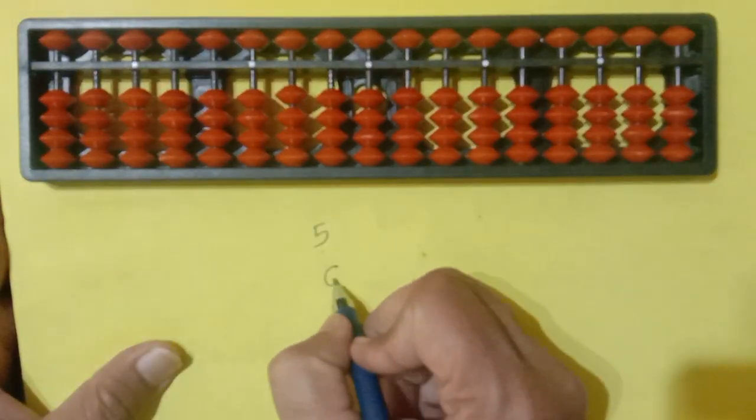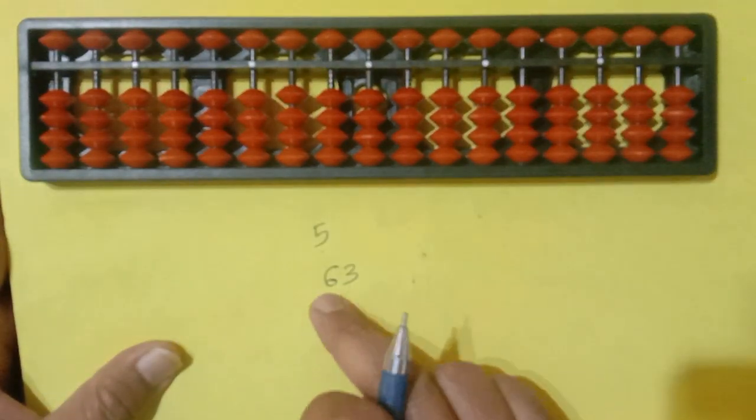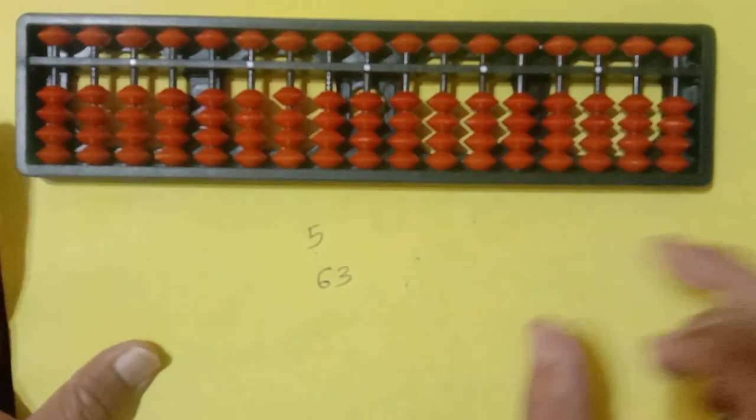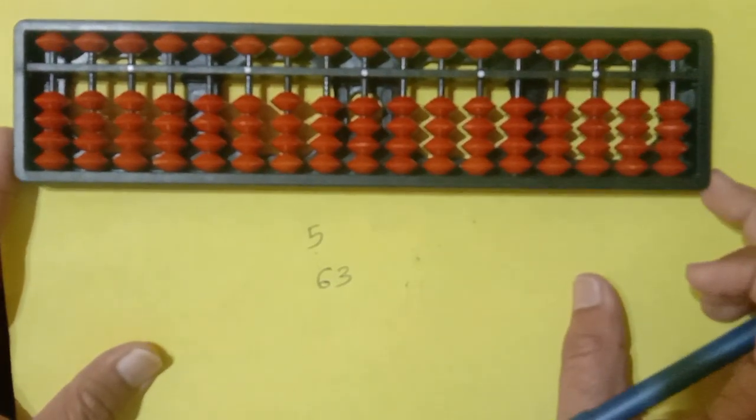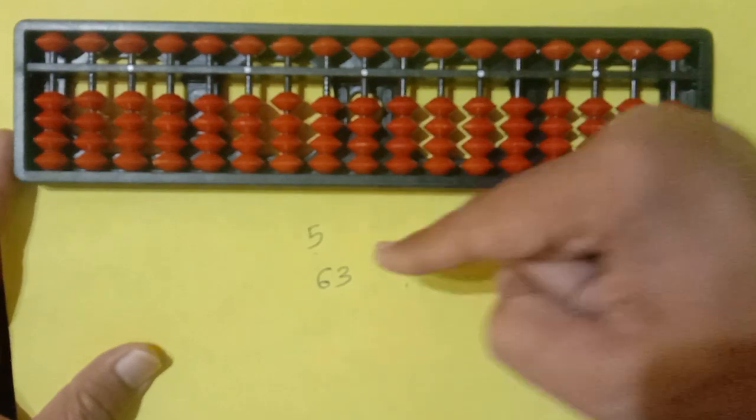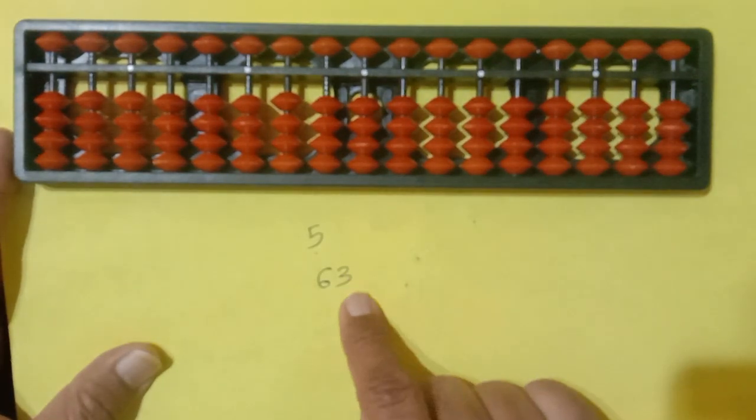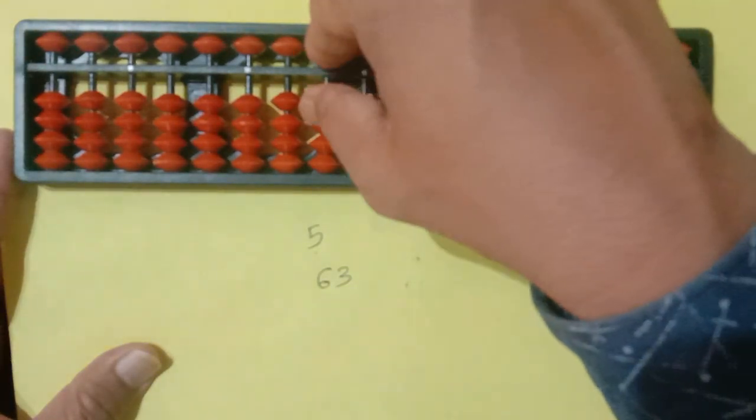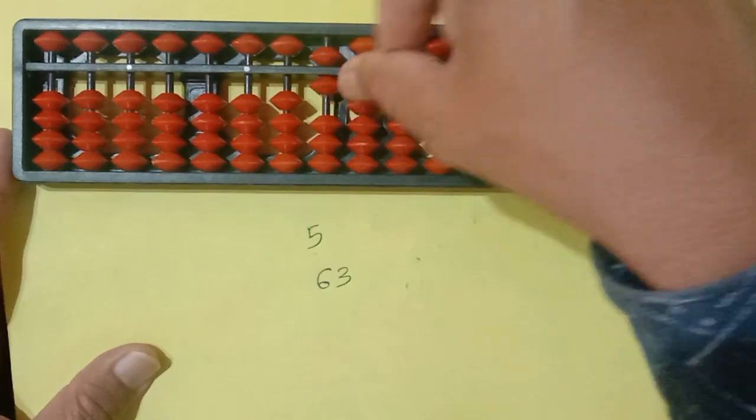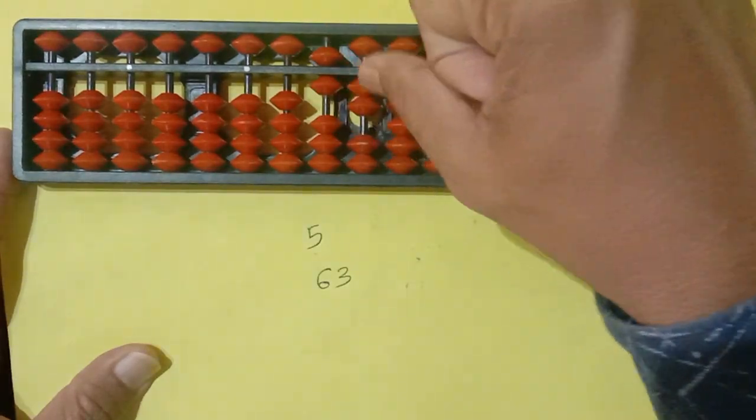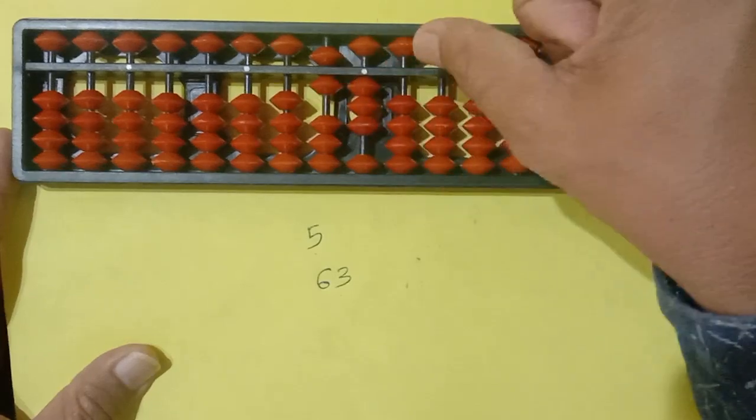So here 63. The number is 63, students. Now see here. In the tenth place, it is 60, and in one place, it is 3. Here, 50 plus 10, it becomes 60. Then 1, 2, 3. Its value is 63.